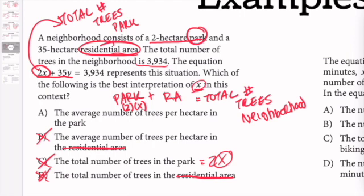So A is the correct answer. It's the average number of trees per hectare in the park. So if we multiply x times 2, we would get the total number of trees in the park.